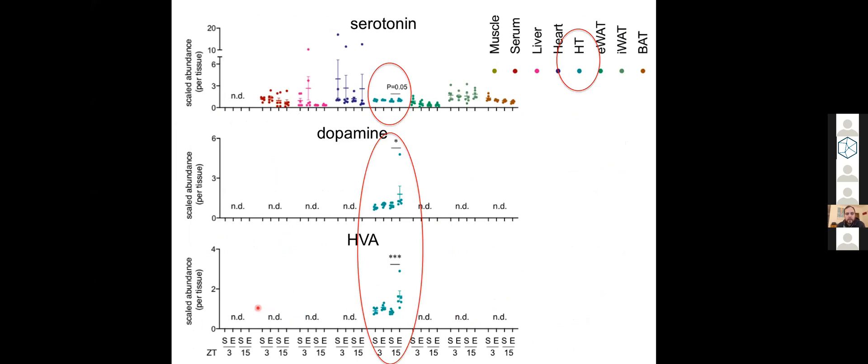We can also look at neurotransmitters. Serotonin and dopamine metabolites here in the hypothalamus showed increased abundance after exercise performed at night again. This suggests maybe some of the known benefits of exercise on mental health and memory and sleep even can be fine-tuned, and these effects might be stronger when the exercise is performed at a particular time of the day.